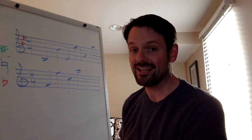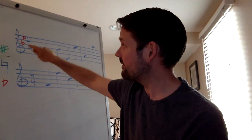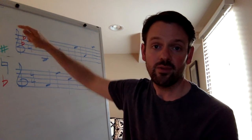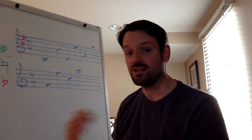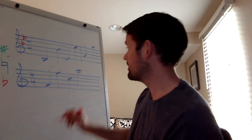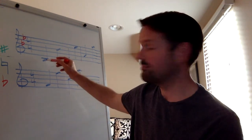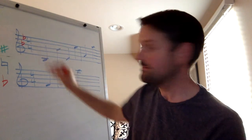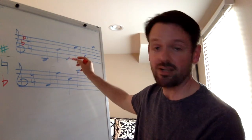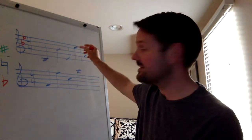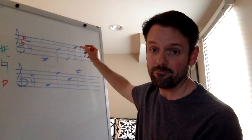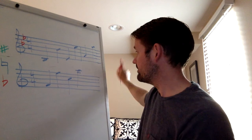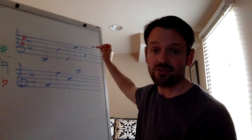When I add a second flat to the key signature, that flat is on the E space. F, A, C, E. So when you have a flat in the E space, that means that all of your E's are going to be flat. So we have B flat, B flat still because there's a flat sign on the B line. And then this E becomes E flat, and this E also becomes E flat. This is still A natural, and so is this.